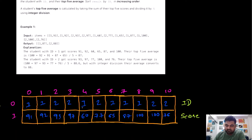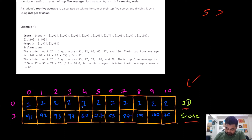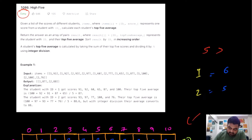Let's understand the problem statement. Essentially, we are given a two-dimensional array where we are given ID and score for different students in a class. We are given at least five scores or more for every single student. We can see we are given two IDs: student ID one and student ID two. For student ID one, we are given the results of six different scores, and for student ID two, we are given the results of five different scores.